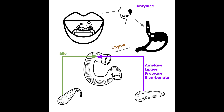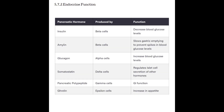At this point the exocrine portion of the digestive tract is done and endocrine function is going to pick up now that the food is broken down into small molecules. Switching over to the endocrine function of the pancreas — remember that the hormones are produced by the cells found in the islets of Langerhans.